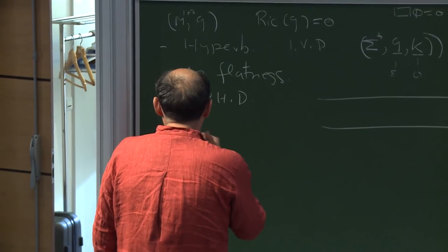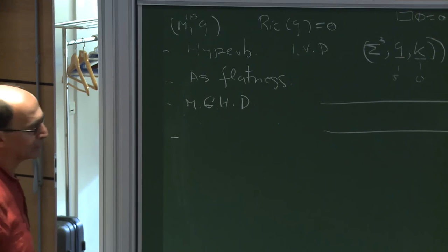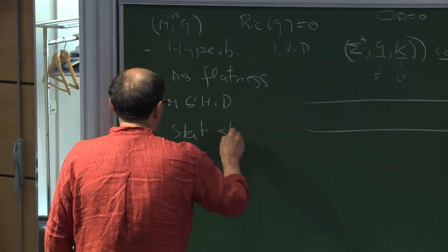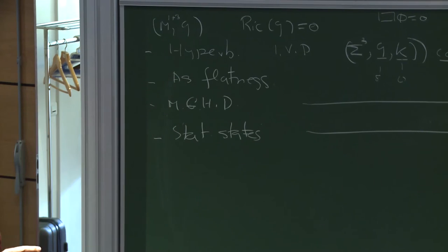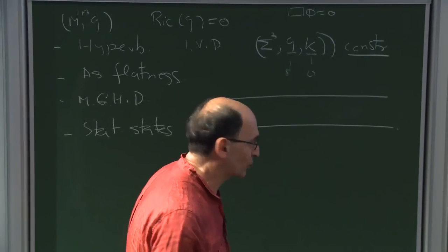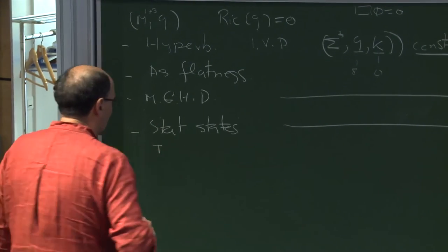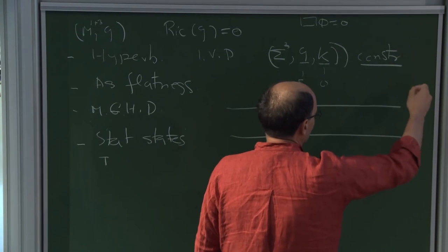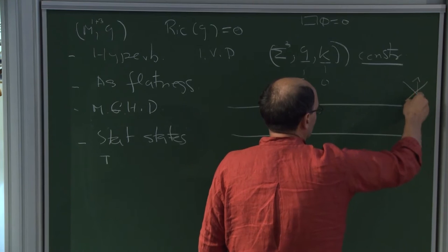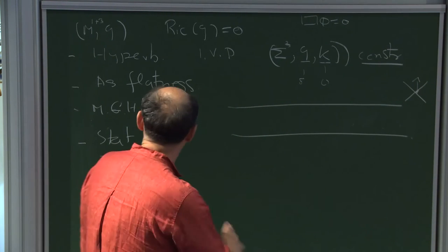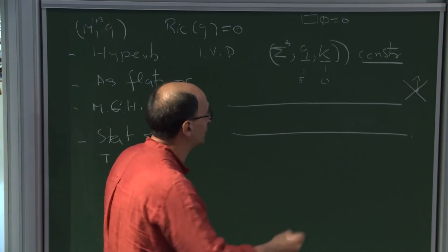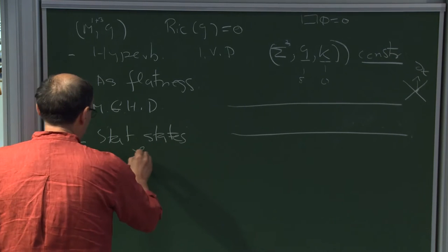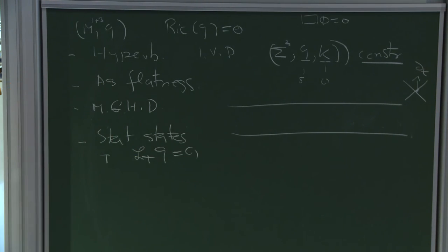Whenever you have a very difficult nonlinear problem, you look for stationary states — states which are independent of time. In general relativity, time is a more complicated notion, but you can make sense of it. A spacetime is stationary if there exists a vector field T which is time-like at spatial infinity — meaning it looks more and more like the standard d/dt in Minkowski space as you go to infinity — such that the derivative of the metric with respect to T is equal to zero.